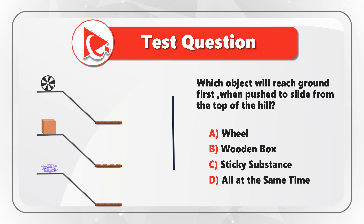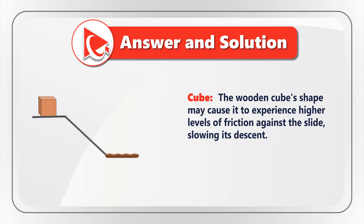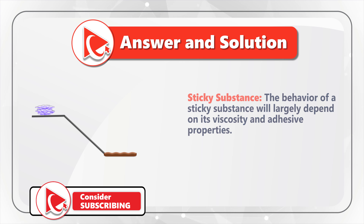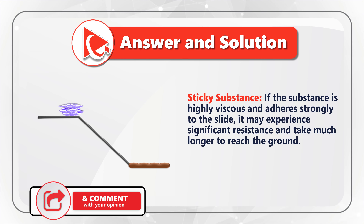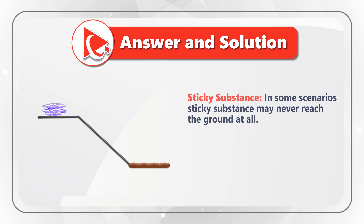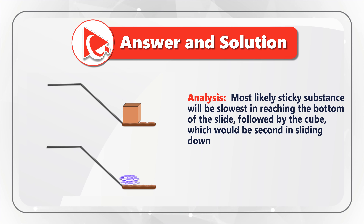The cube's shape may cause it to experience higher levels of friction against the slide, slowing its descent. At the same time, sticky substance may move even slower, because the behavior of sticky substance largely depends on its viscosity and adhesive properties. If the substance is highly viscous and adheres strongly to the slide, it may experience significant resistance and take much longer to reach the ground. In some scenarios, depending on viscosity, the sticky substance may never reach the ground at all. Most likely, the sticky substance will be the slowest, followed by the cube.